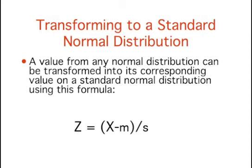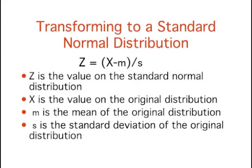A value from any normal distribution can be transformed into its corresponding value on a standard normal distribution using this formula. In this formula, z is the value on the standard normal distribution, x is the value on the original distribution, mu is the mean of the original distribution, and sigma is the standard deviation of the original distribution.